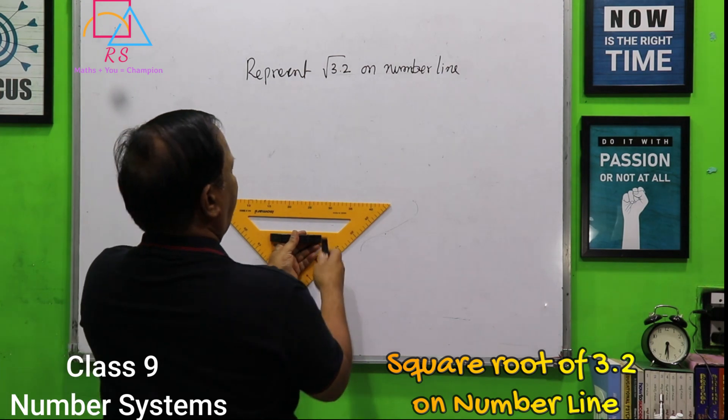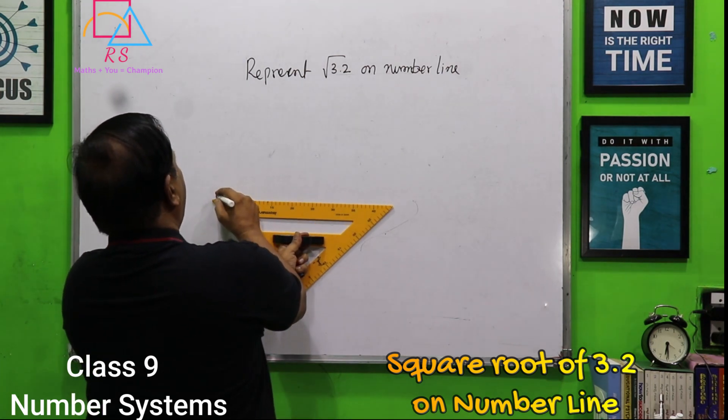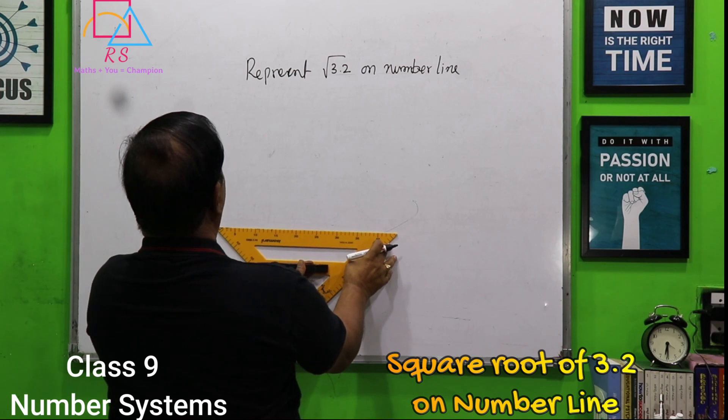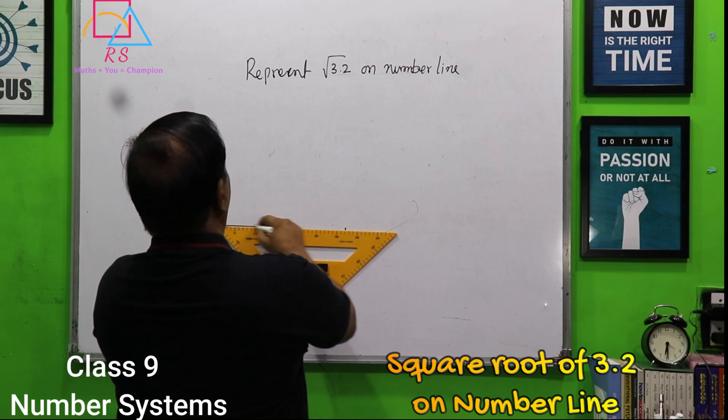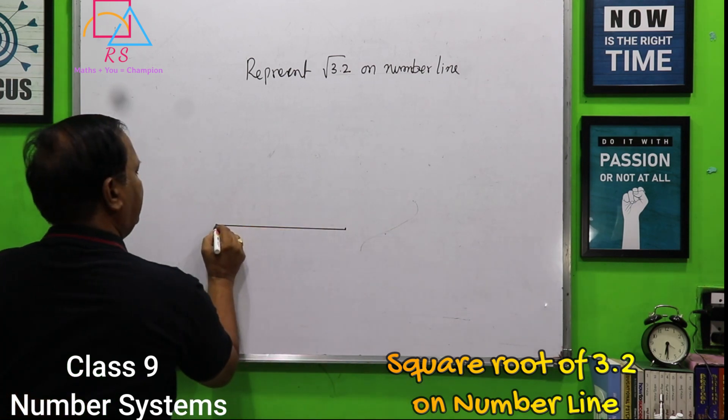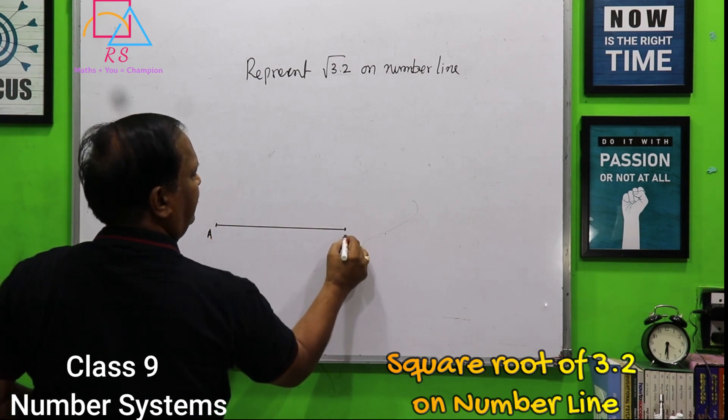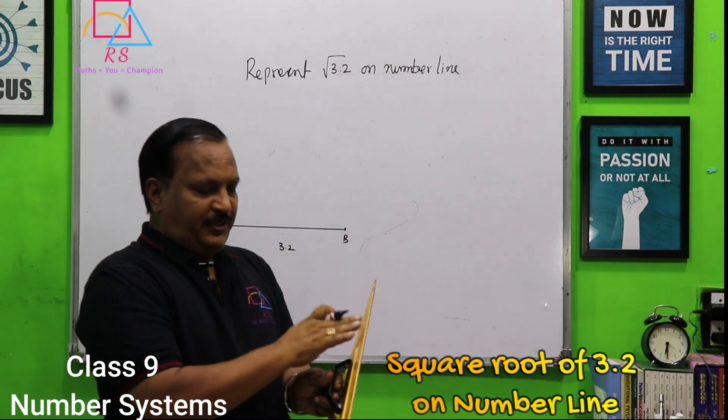This is my point. I will draw a little down. Beginning point and 3.2. So, this is 3.2 units.